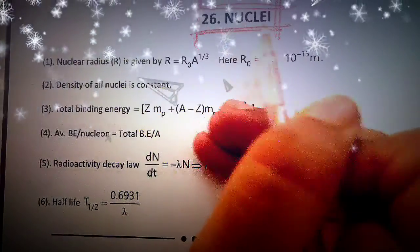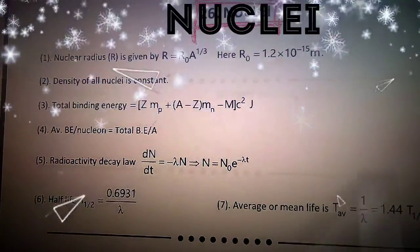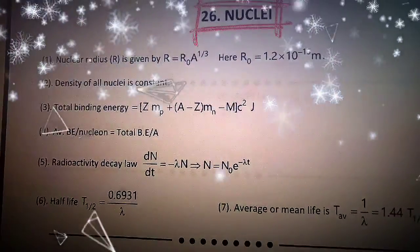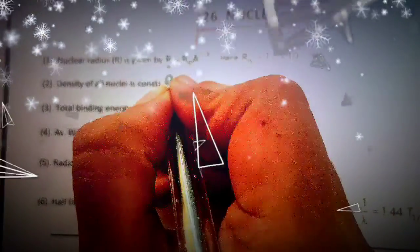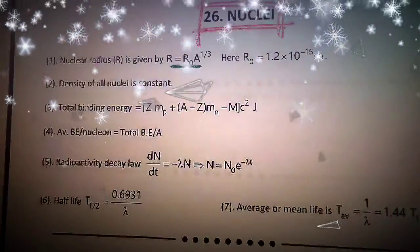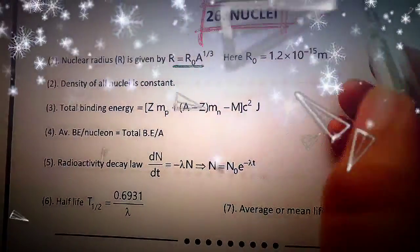So, this is our topic of today's topic of Nuclei. So, its important formula is that nuclear radius is given by R equal to R naught A to the power 1 by 3.